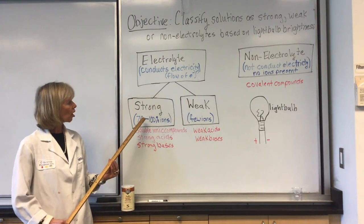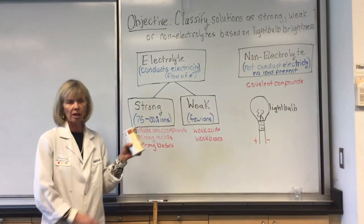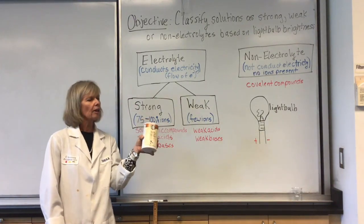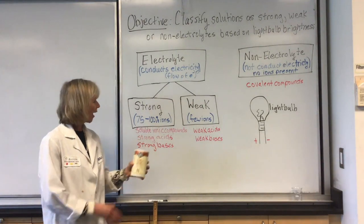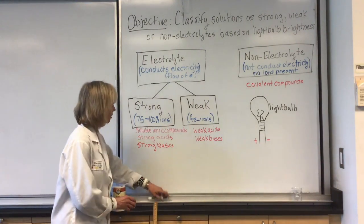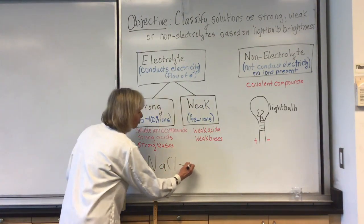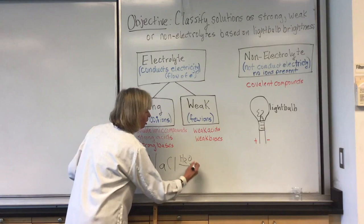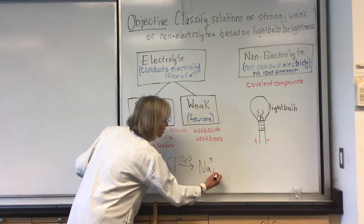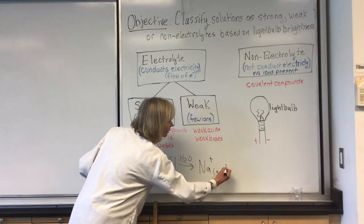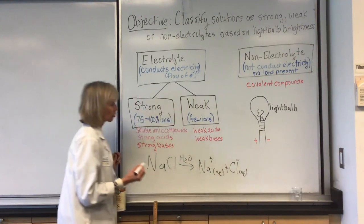Some examples of strong electrolytes are soluble ionic compounds, for example, table salt, sodium chloride. This is a compound when we put it in water, it dissolves so it's soluble and it forms ions. For example, NaCl, when I put that into water, it 100% forms ions. We have sodium ions and chloride ions in our aqueous solution.